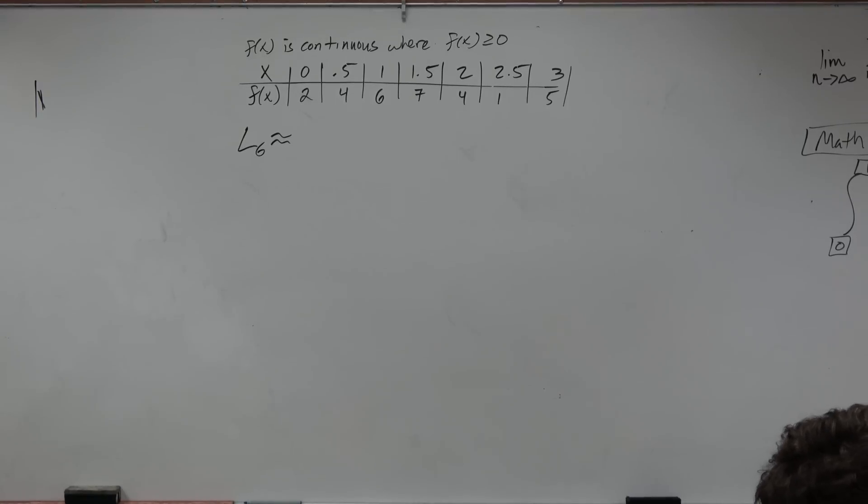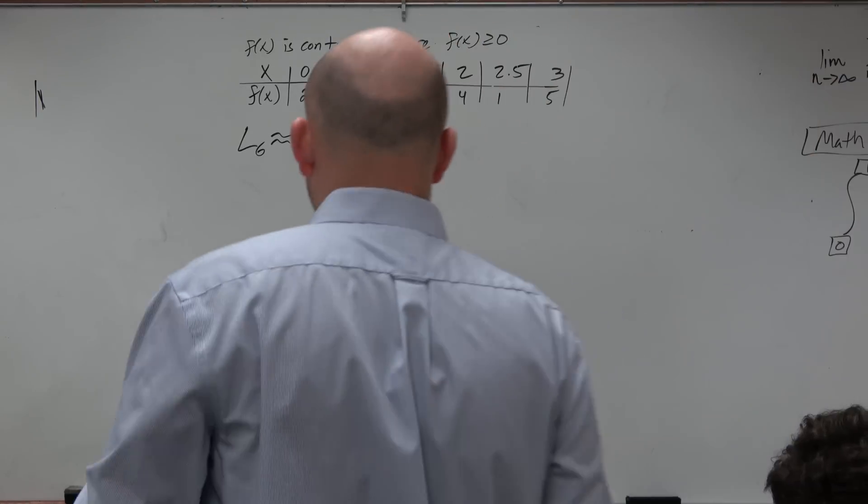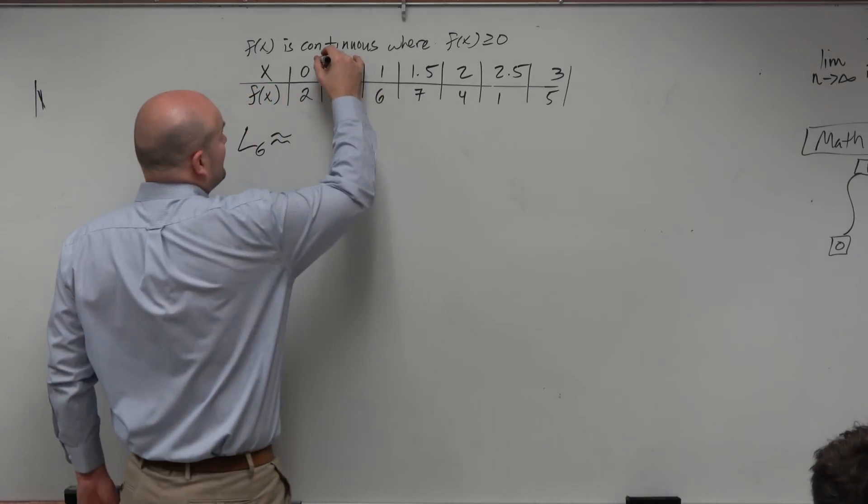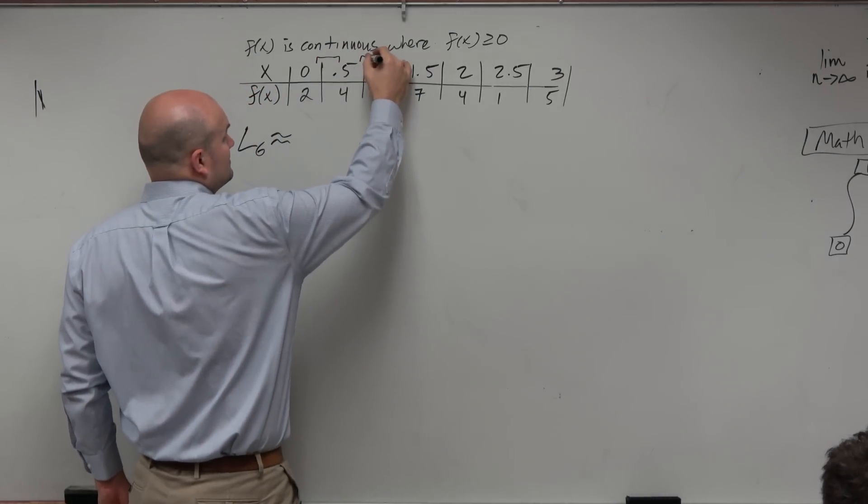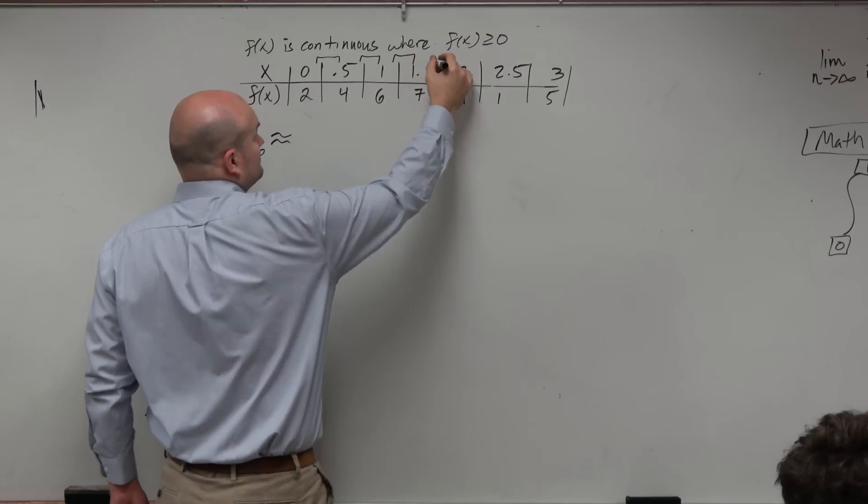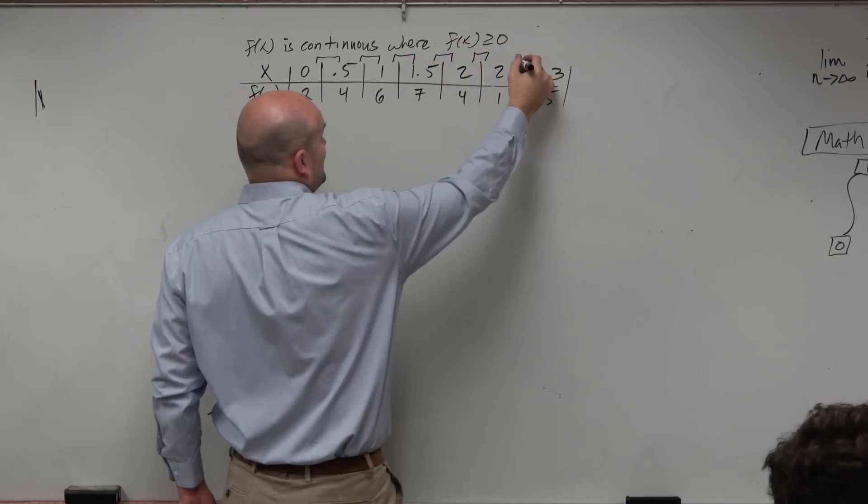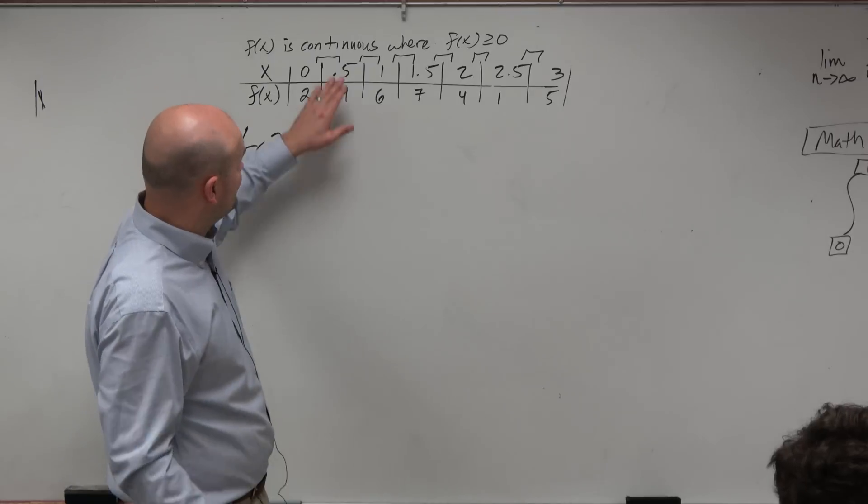Now, what's important about this is, again, what we want to look at is for some uniformity. Do we have a constant delta x? Yes, we're going by 0.5 every time. Right? And I always like to look at that.